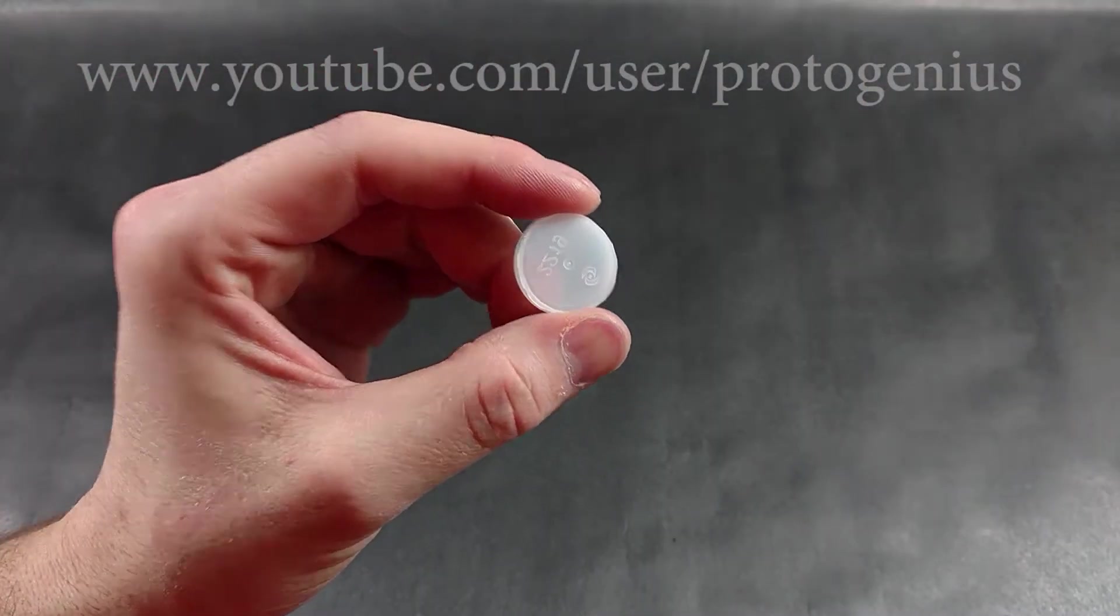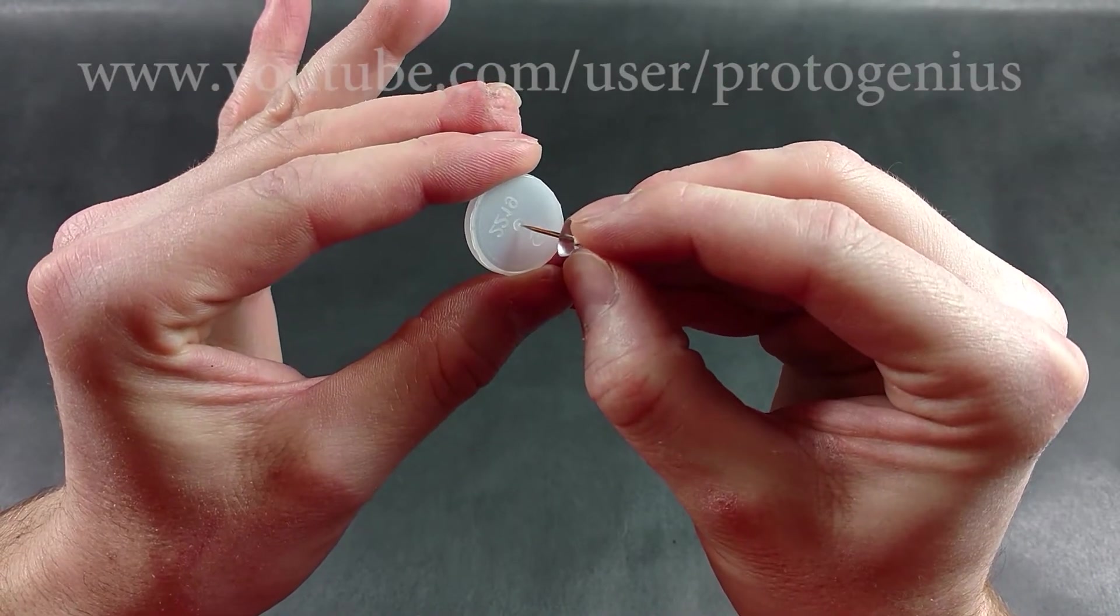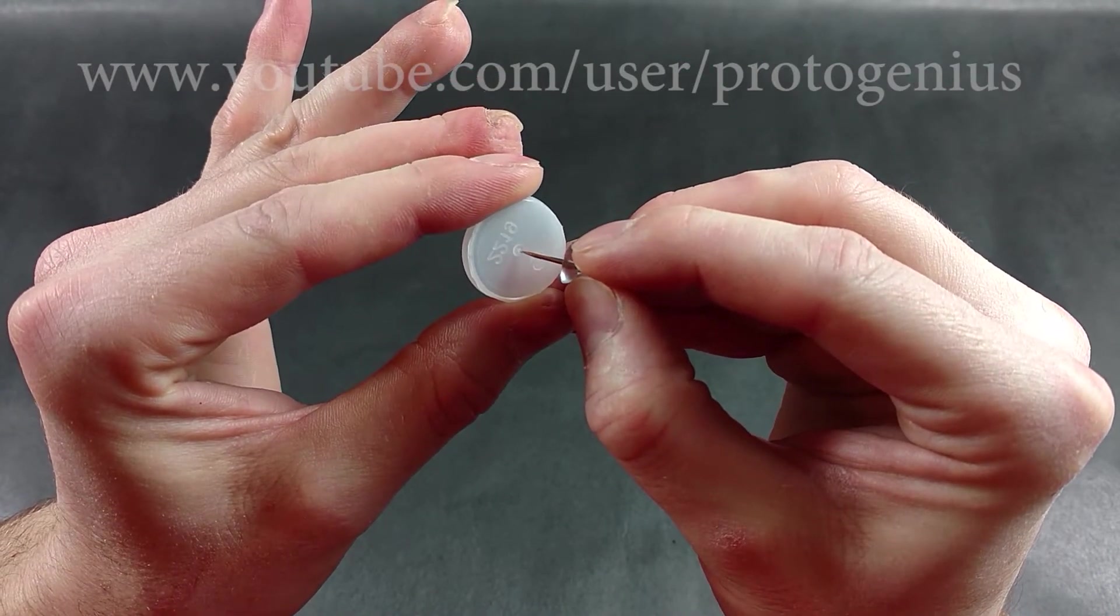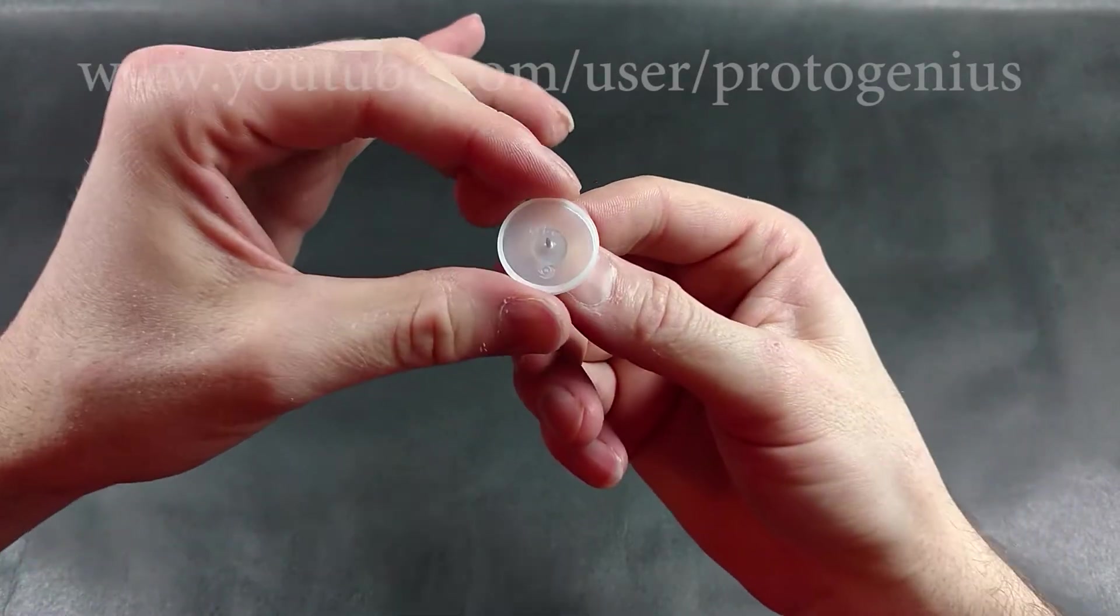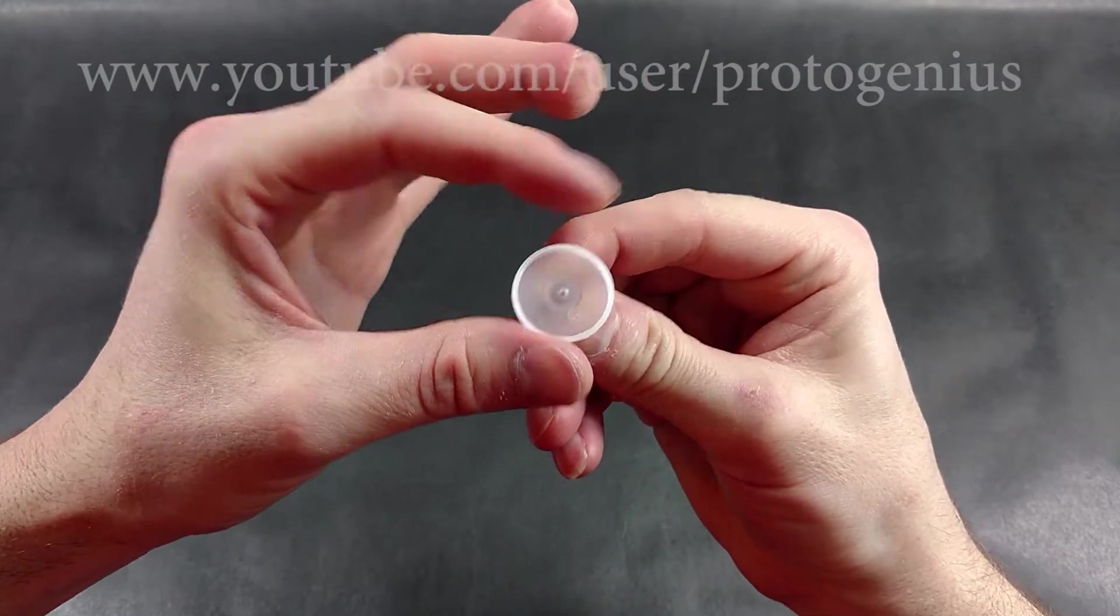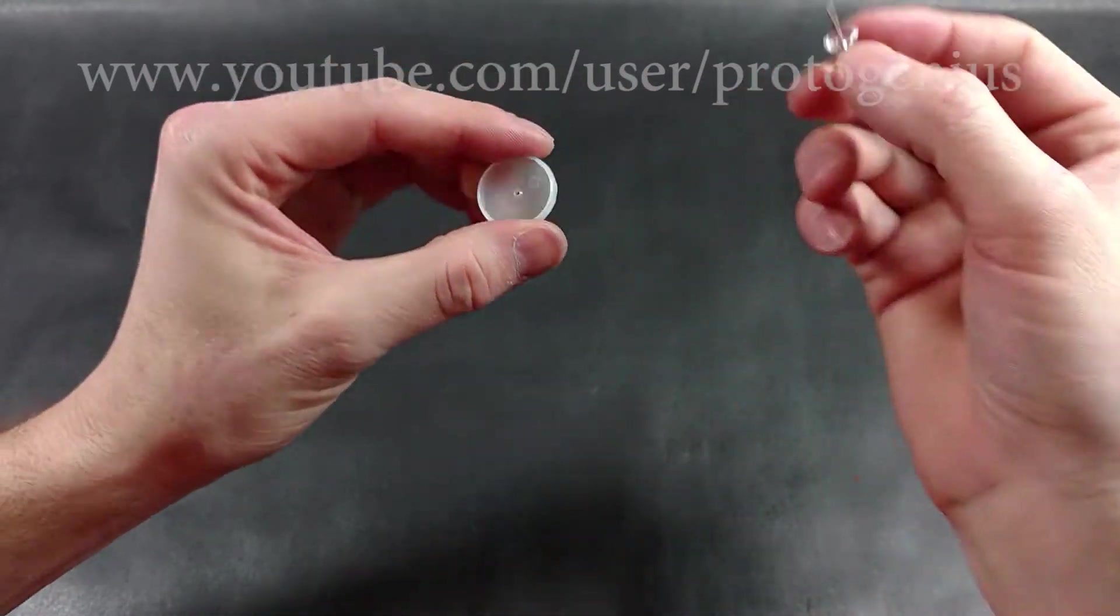So what you're going to do now is you're going to grab a thumbtack, something that's kind of sharp, but be really careful here guys. Don't poke yourself. This particular kind of water bottle has a little divot in the center. It makes it a lot easier to find the exact center on this. It makes the wheels spin without being bumpy at all. I'm just going to kind of round that out a little in there.